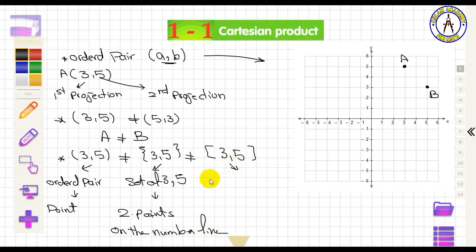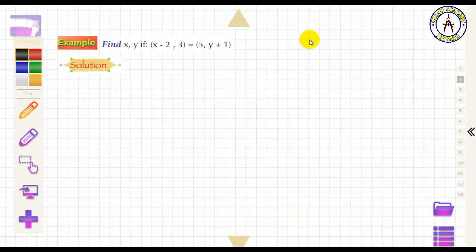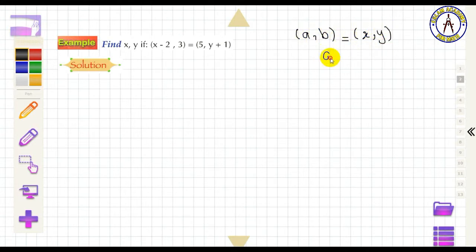The interval [3, 5] includes all values from 3 to 5. For two equal ordered pairs (A, B) = (X, Y), that means A equals X and B equals Y.